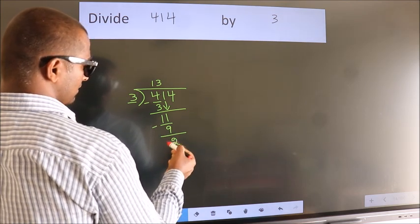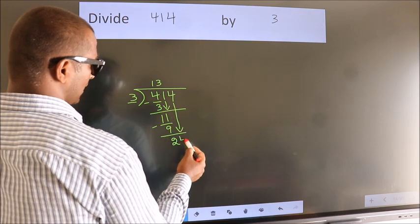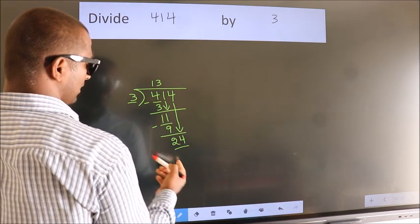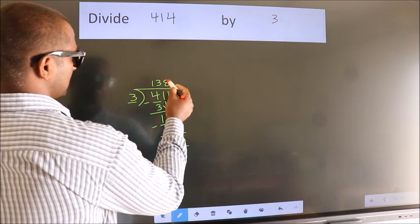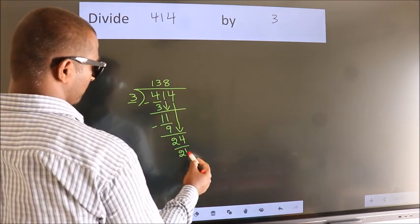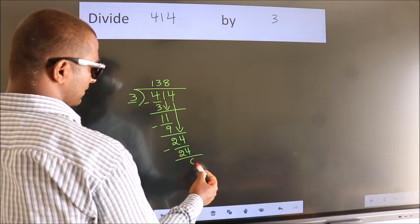After this bring down the beside number. So 4 down. So 24. When do we get 24? In 3 table. 3 8s 24. Now we subtract. We get 0.